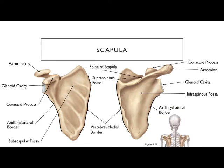Now for the clavicle — the collarbone. It has two ends: one is pinched like it's squeezed between fingers, and the other is flat on the face. The flat end articulates with the manubrium of the sternum — that's the sternal end. The other end articulates with the acromion — that's the acromial end. Notice the clavicle has an S-shape to it.